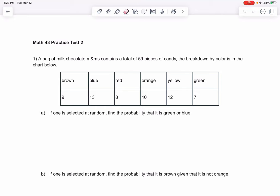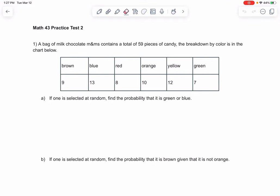Let's check out the math practice test 2. So if we have milk chocolate candies and we have 59 total candies broken down by these colors below, if one's selected at random let's find the probability that it's green or blue. That means it could be either color, it'll be out of the total of 59, and then we'll find green and blue and add them up.